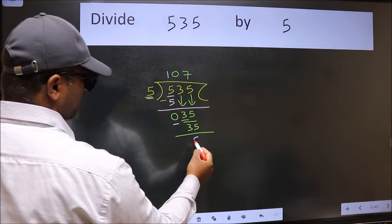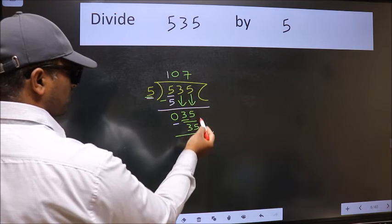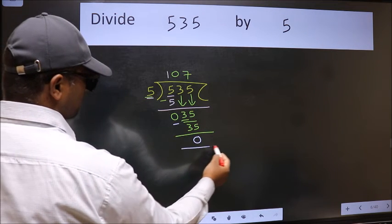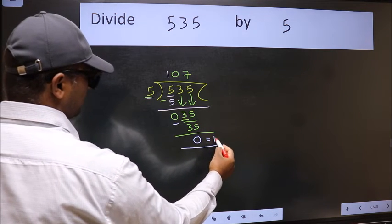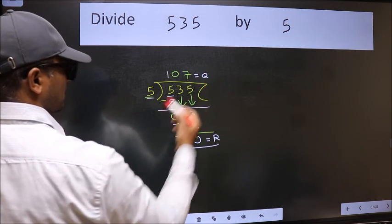We get zero. No more numbers to bring down, so we stop here. This is our remainder and this is our quotient.